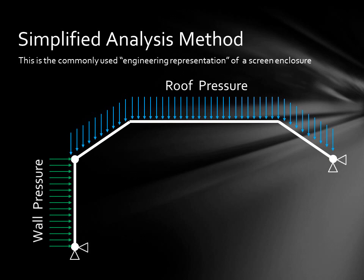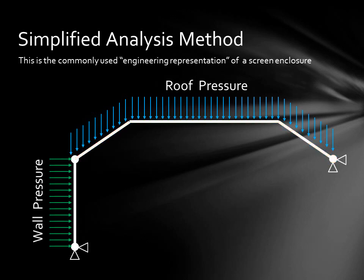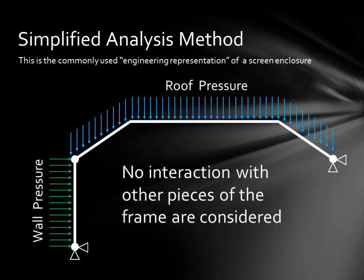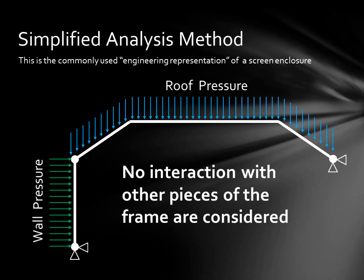The simplified analysis method is used by most engineers in the industry. This method is used to design the bulk of the screen enclosure frame and considers only the roof beam and the wall column. These pieces are assumed to be hinged together so that they can freely rotate about each other. However, no interaction with any other piece of the frame is considered.